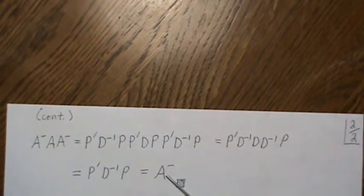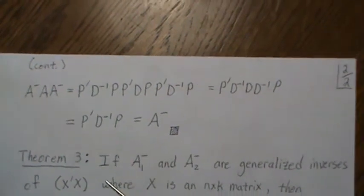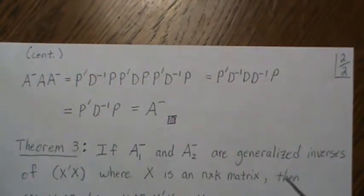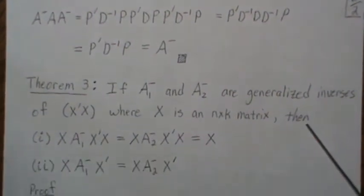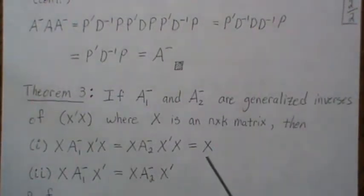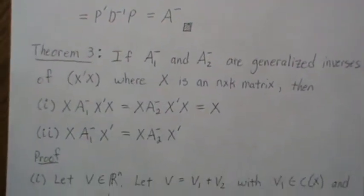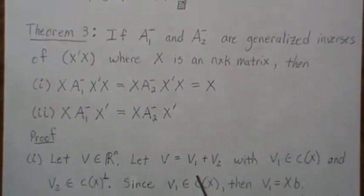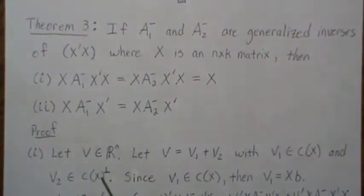Theorem 3: if A1-dash and A2-dash are two generalized inverses of X'X, where X is an n-by-k matrix, then two properties hold: X A1-dash X' X = X, and X A1-dash X' equals X A2-dash X'. This property will play an important part in the next video. For the proof, let V be an n-by-one vector that can be broken into two components V1 and V2, where V1 is in the column space of X and V2 is in the orthogonal complement to the column space of X.